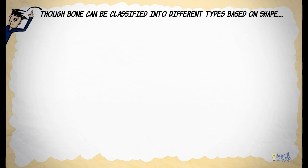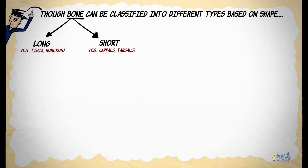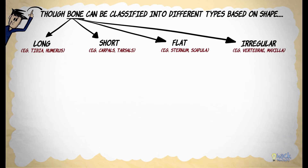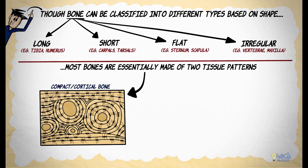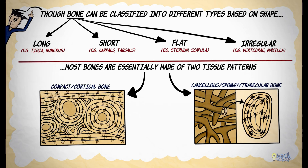Though bone can be classified into different types based on its shape — as long, short, flat or irregular — most bones are essentially made of two tissue patterns called compact or cortical bone, and cancellous or spongy trabecular bone.